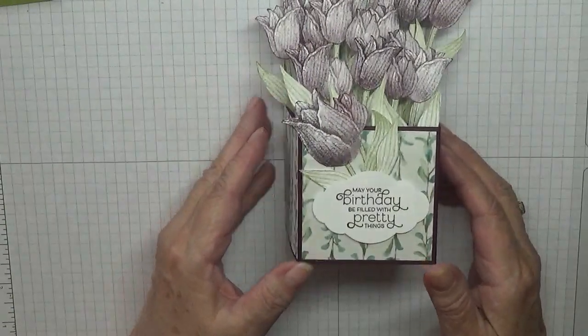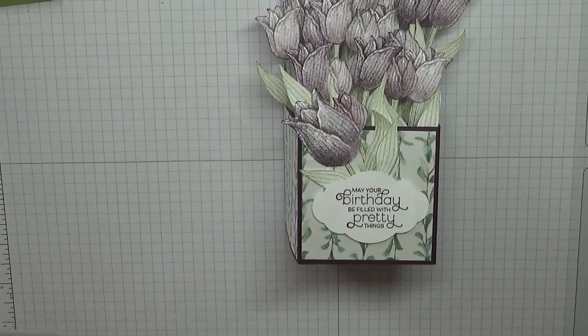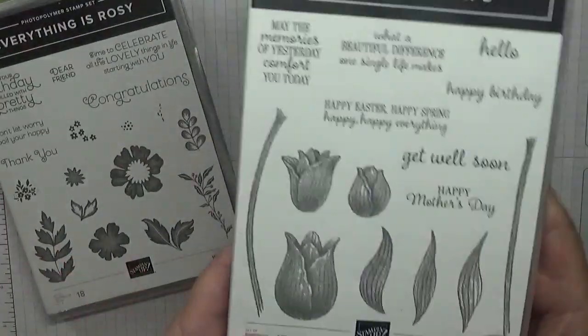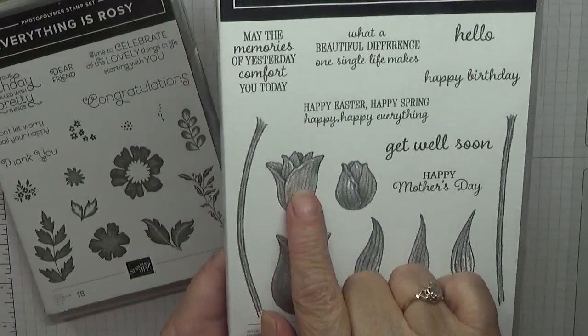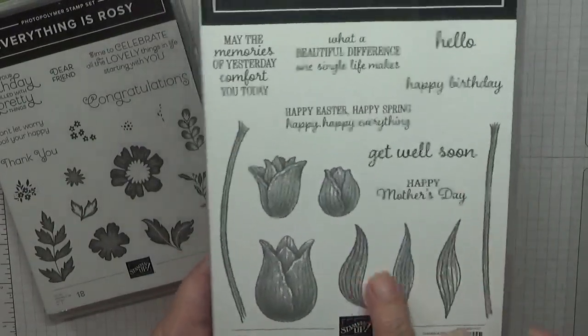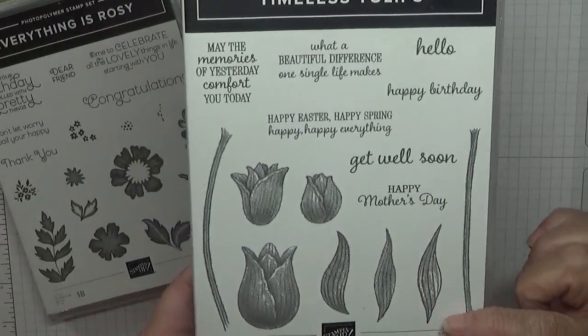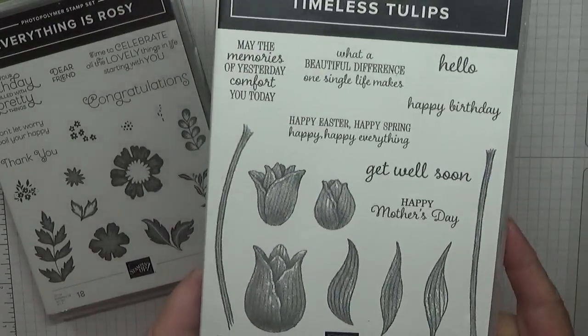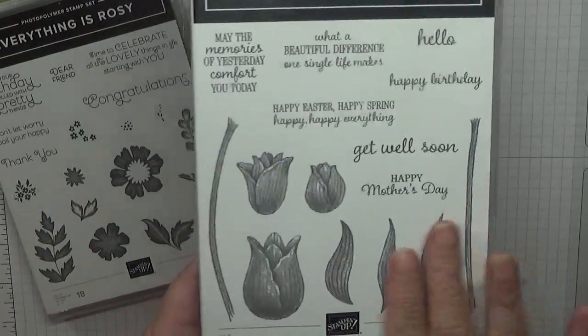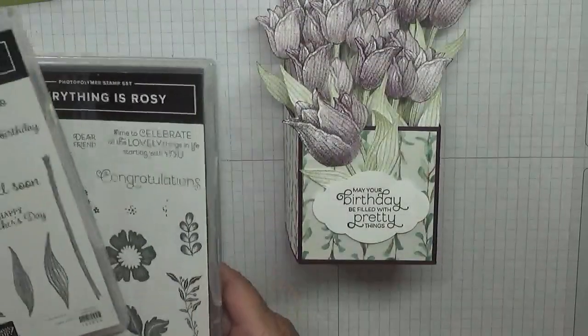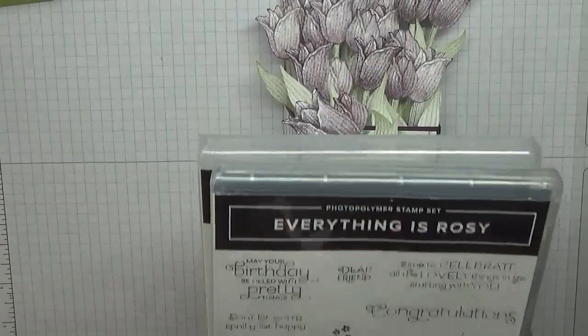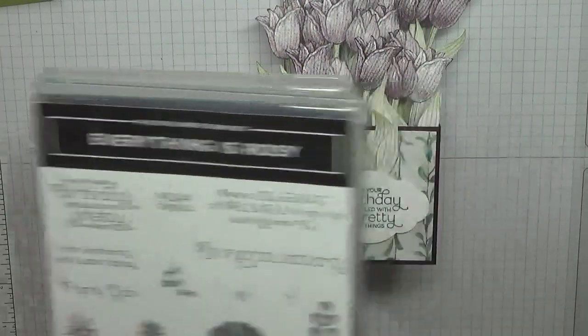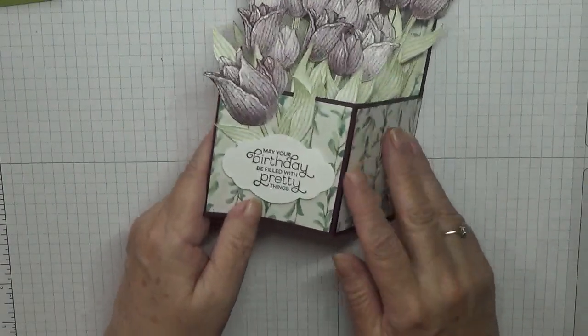I used timeless tulips and I cut lots of them out, loads of the leaves out and 20 or 30 odd stems out. I've already done all that because it's going to take me a little while. Then I used everything Rosie just for the sentiment: may a birthday be filled with pretty things.